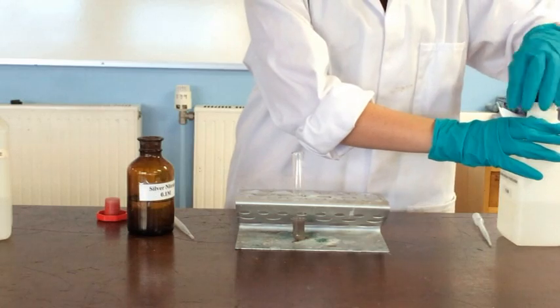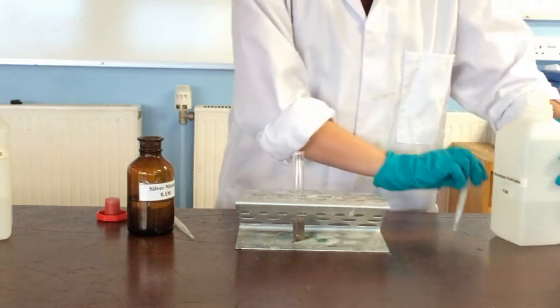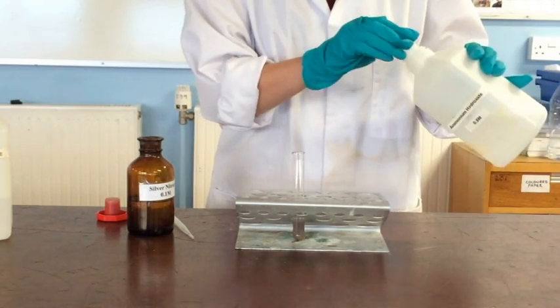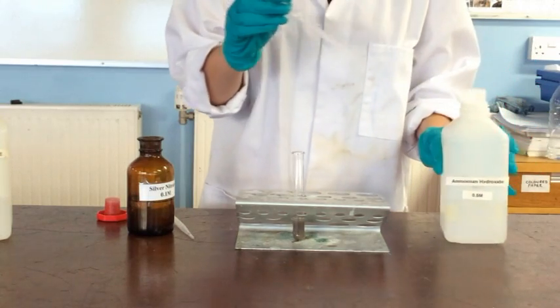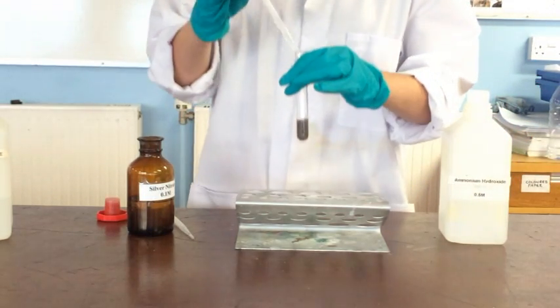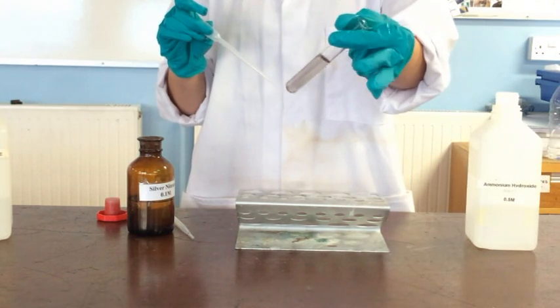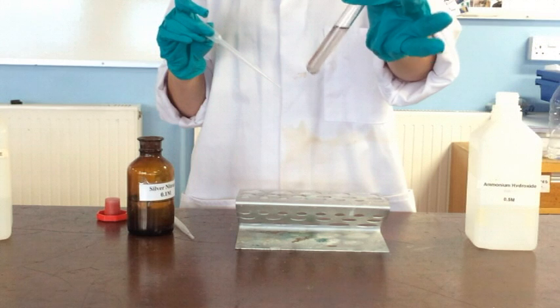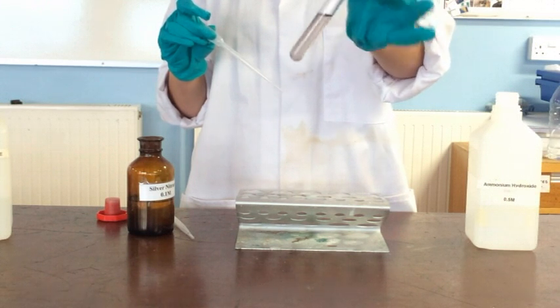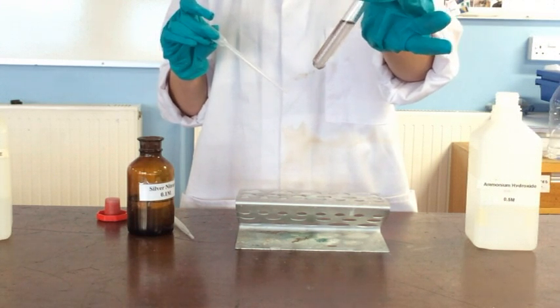Then we need to add some ammonium hydroxide until that brown precipitate just about dissolves. That is our Tollens' reagent, nice and clear now.